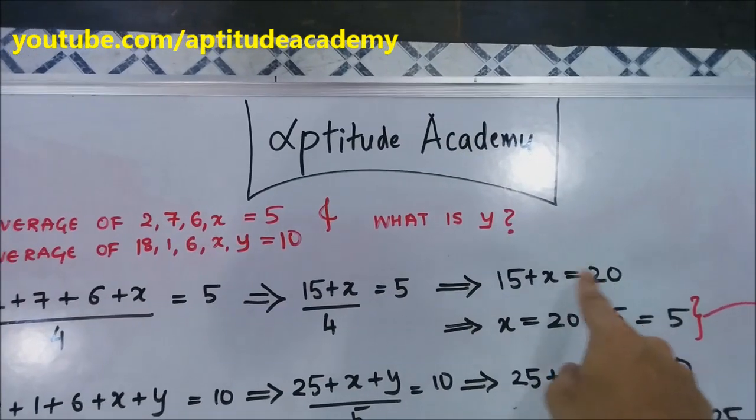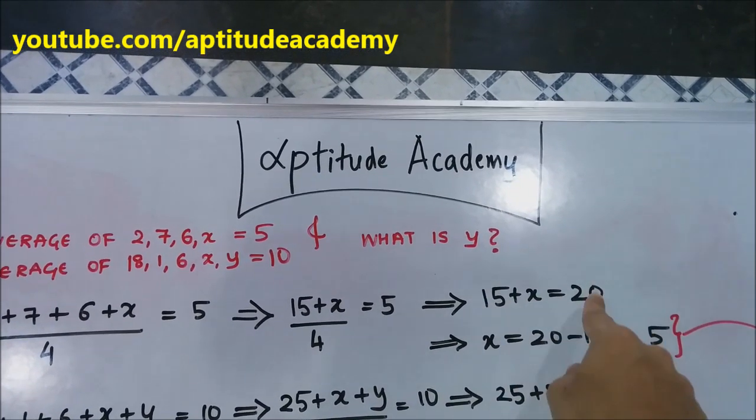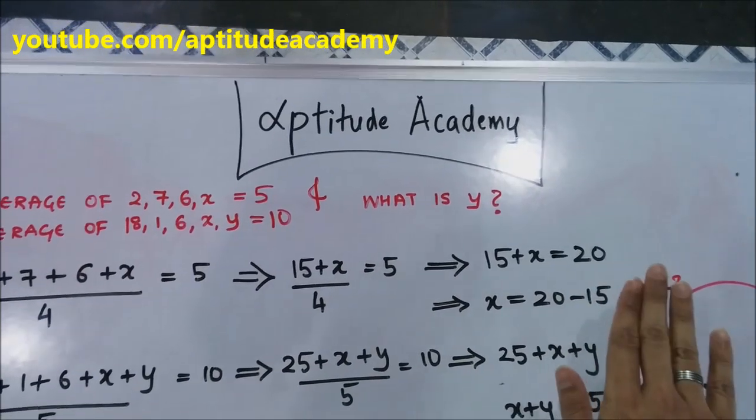Now, if you take 4 to this side, it will give you 20. So, 15 plus x is equal to 20. Now, x is kept here, 15 is taken to that side, so x is equal to 20 minus 15 is equal to 5. Let that be.